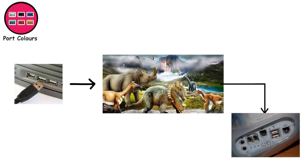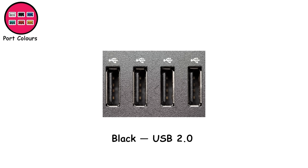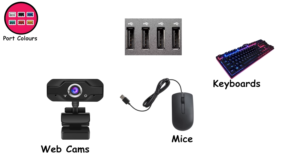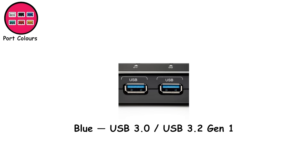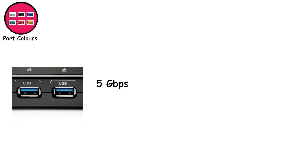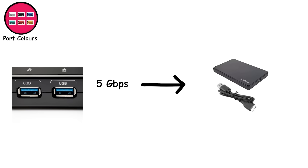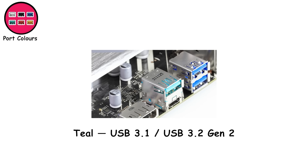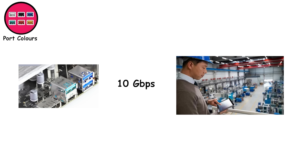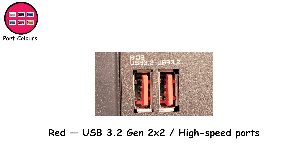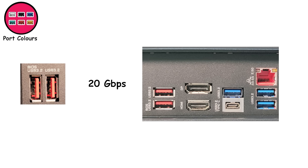White ports (USB 1.x) max out at 12 megabits per second — basically prehistoric USB. Black ports (USB 2.0) are still extremely common; keyboards, mice, and webcams don't need crazy speeds, and 480 megabits per second is plenty for simple peripherals. Blue ports (USB 3.0 / USB 3.2 Gen 1) run at 5 gigabits per second — the safe option for external drives. Teal ports (USB 3.1 / USB 3.2 Gen 2) can reach 10 gigabits per second. Red ports (USB 3.2 Gen 2x2) support 20 gigabits per second, so you don't accidentally plug your fast SSD into a slower port.